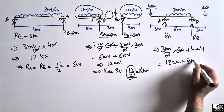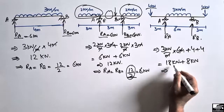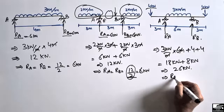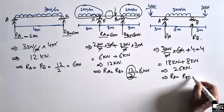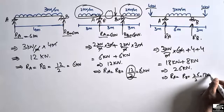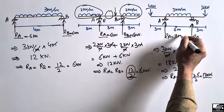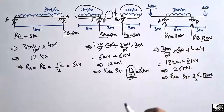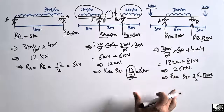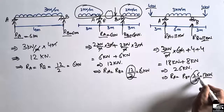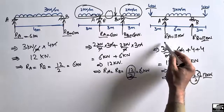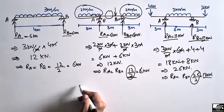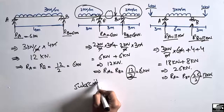The total load comes out to be 26 kN. Dividing by 2, RA = RB = 26 ÷ 2 = 13 kN. So half of the load is taken by each support. It should be kept in mind: when you have symmetric loading on a beam, you can simply divide the total load by 2 to find the support reaction for each support. Hope you guys understand — don't forget to subscribe to our channel for civil engineering videos. Thank you for watching.